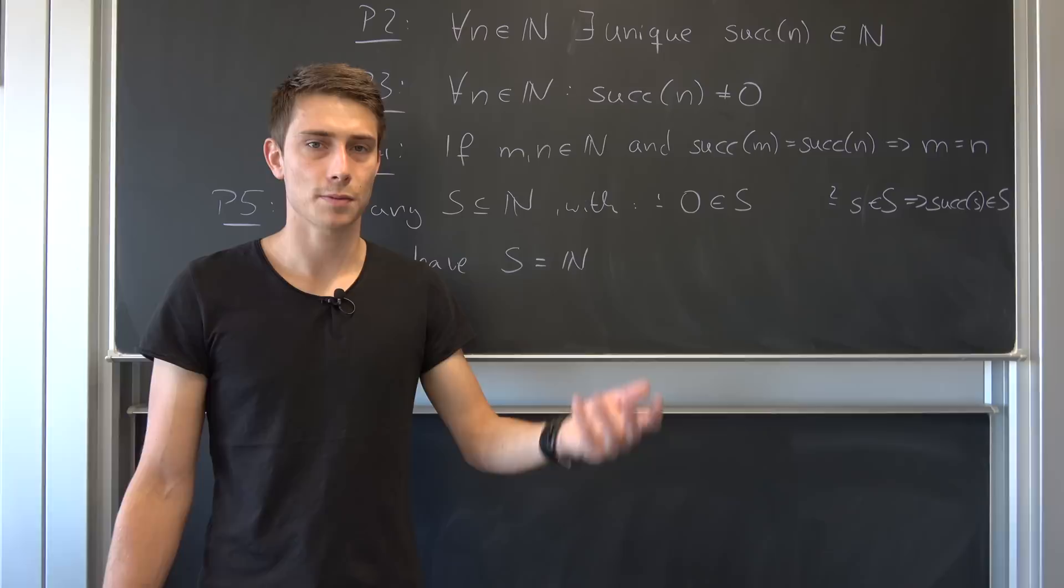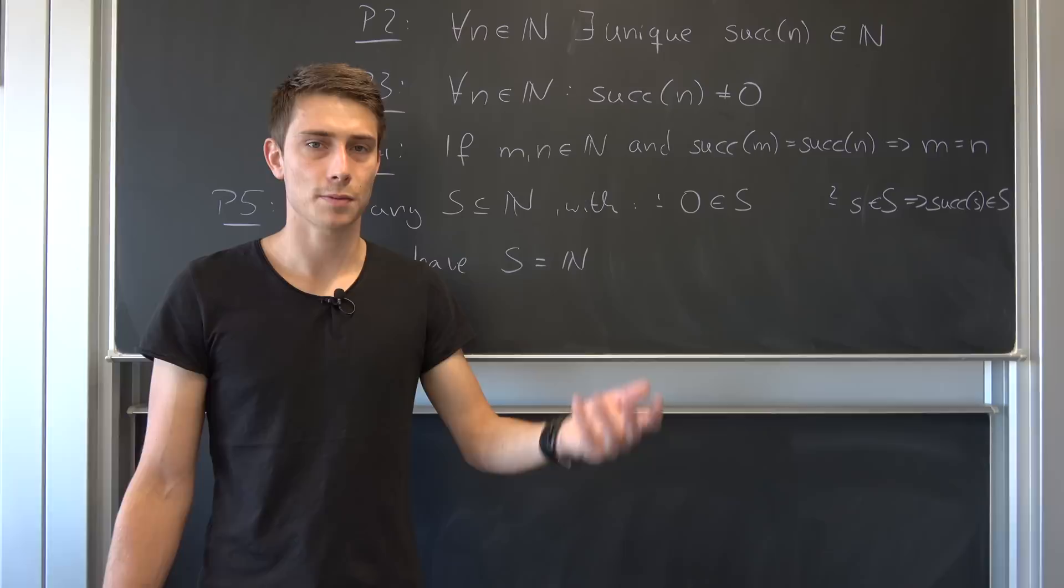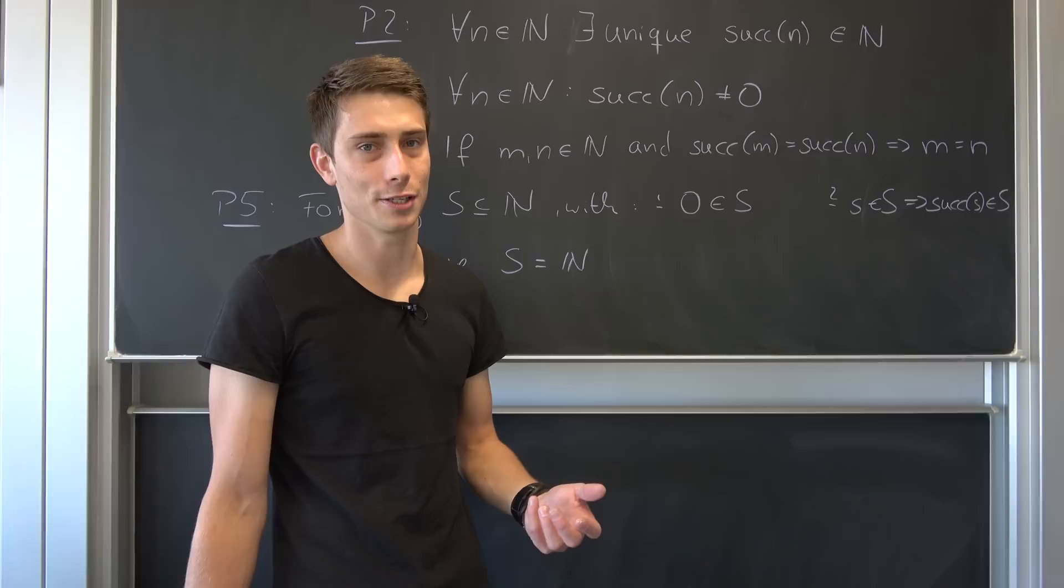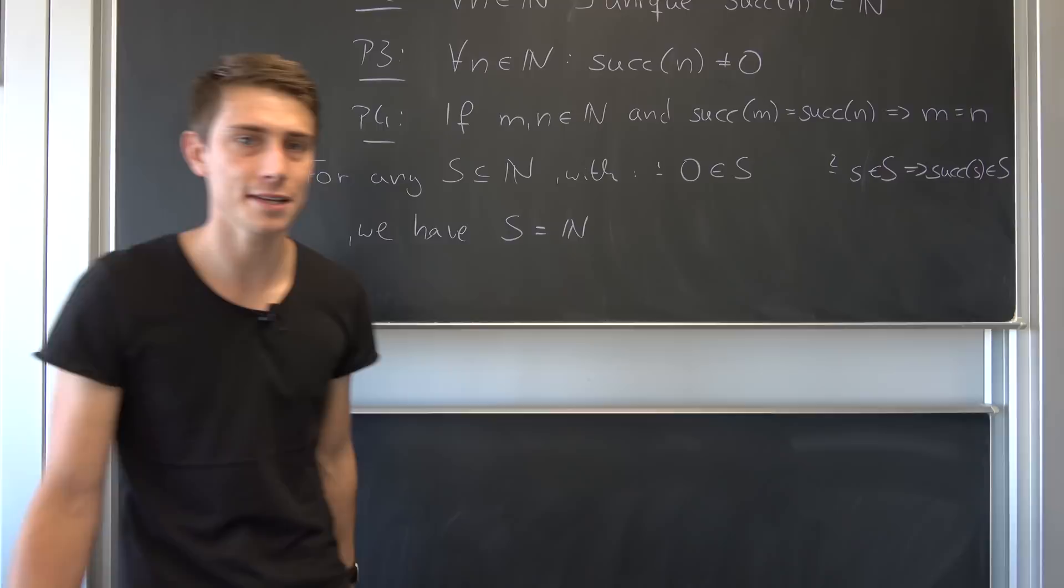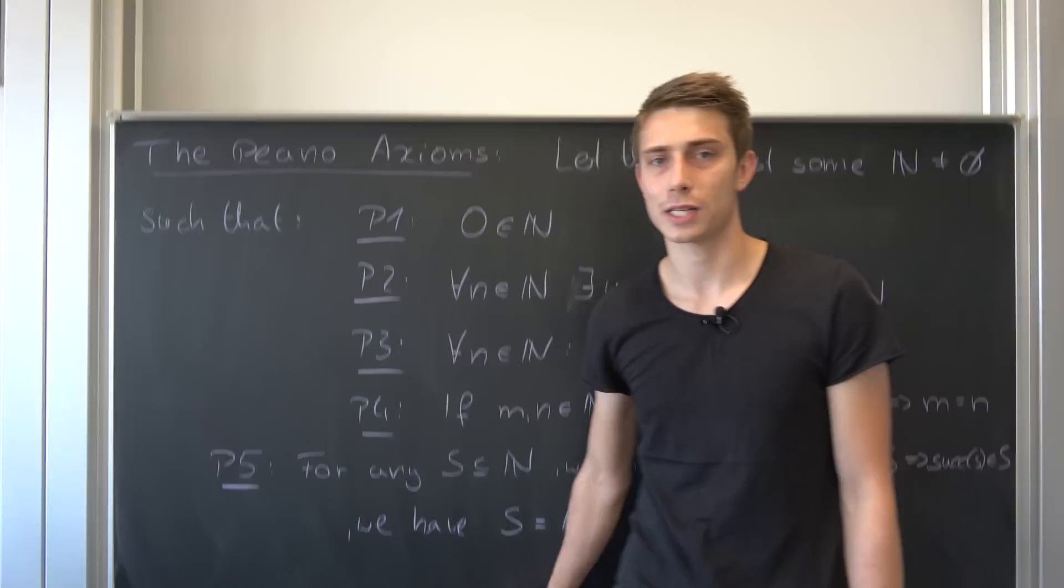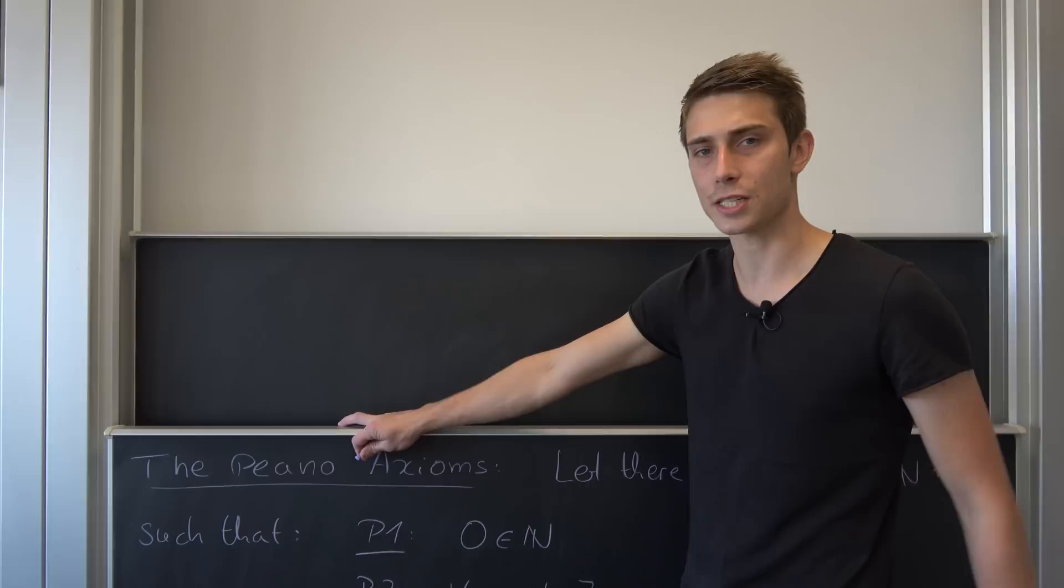What does it say? Basically, we have a subset, proper subset, or just regular subset S, subset of N, with the property that the least element is element of S, and also whenever we have some element S of S, then well that also means that the successor of S is element of S. And if those two rules hold, then well our subset are just the natural numbers itself. That's all it really says.